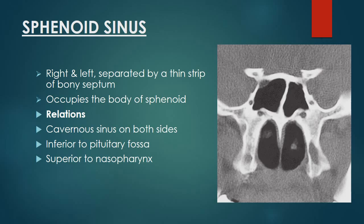Coming on to the sphenoid sinus: there are two sphenoid sinuses, right and left, separated by a thin bony septum, present in the body of the sphenoid bone. The coronal CT image shows bilateral sphenoid sinuses with a bony septum in between. Relations of the sphenoid sinus include: inferiorly the nasal fossa or nasopharynx, superiorly the pituitary fossa, and on both sides the cavernous sinuses. Also visible are the anterior clinoid process, foramen rotundum, and vidian canal.